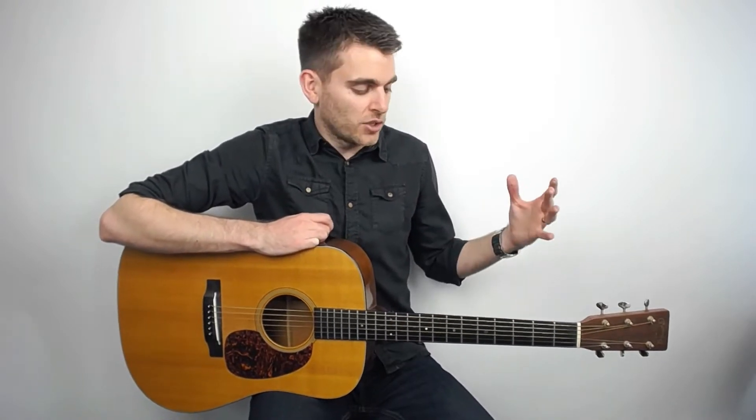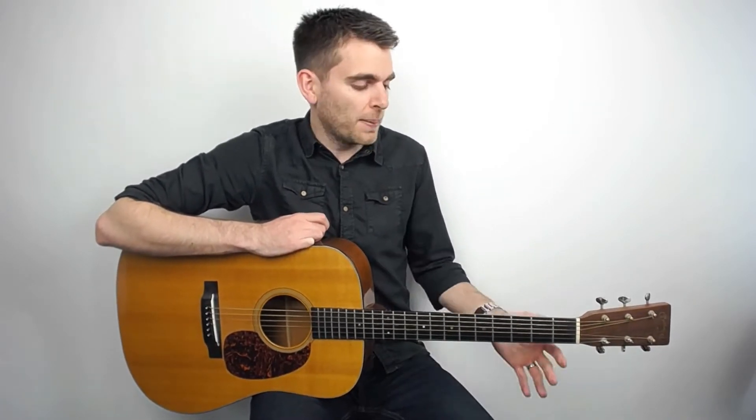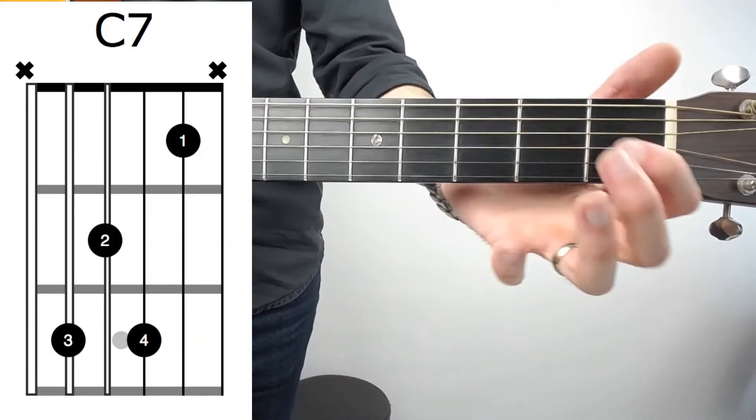It's quite good to look at transpositional shapes and moving a shape around to form different chords. So let's zoom in and take a look at the main shape. Okay, so we start with our C7 chord.